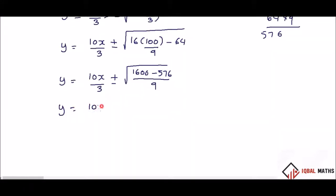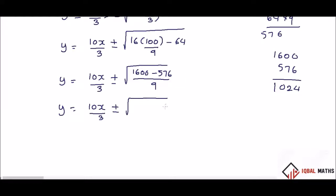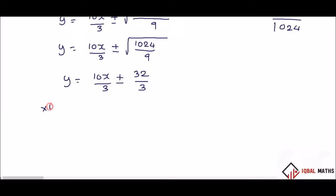y equal to (10x)/3 plus or minus square root of 1600 minus 576, all by 9. That gives square root of 1024 by 9, which equals 32 by 3. Multiplying both sides by 3: 3y equals 10x plus or minus 32.